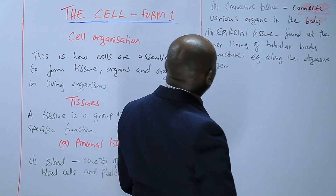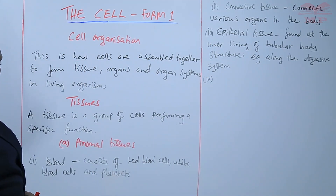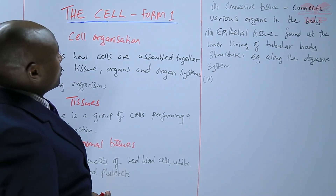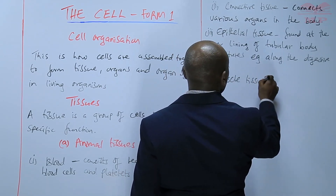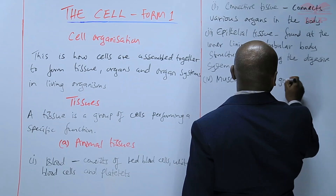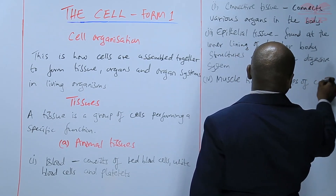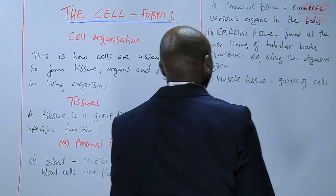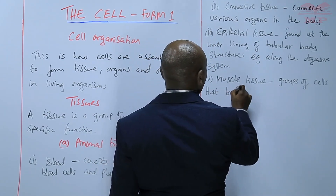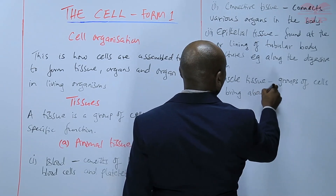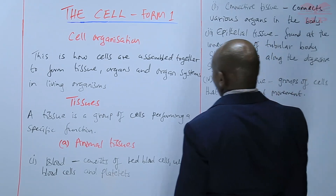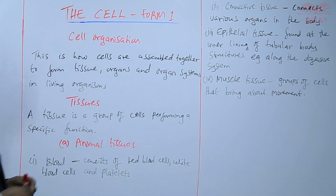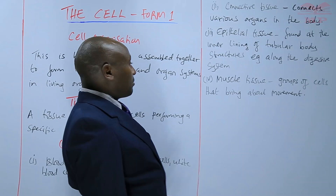Another example of animal tissue is muscle tissue, made up of groups of cells that bring about movements. So basically, those four are examples of animal tissues: we have blood, connective tissue, epithelial tissue, and muscle tissue.